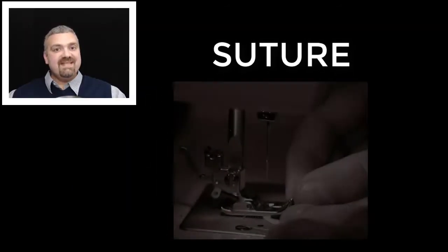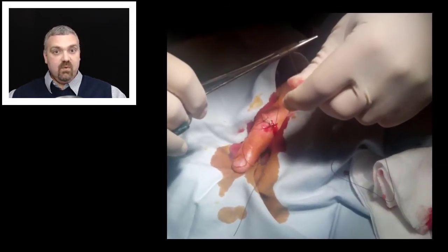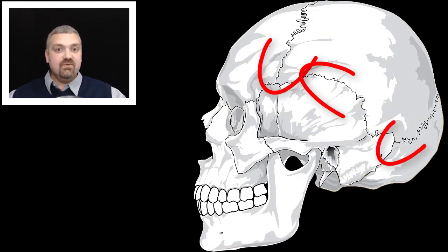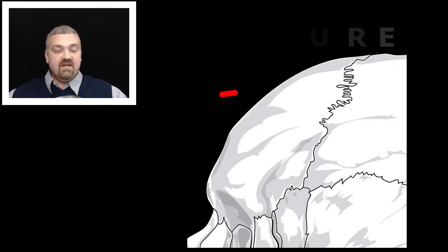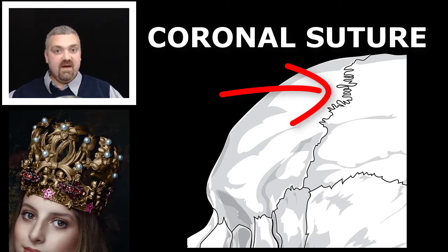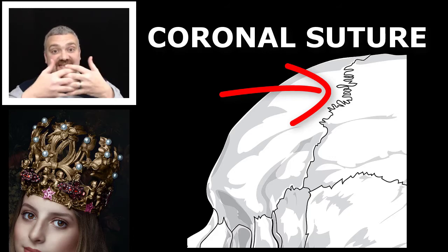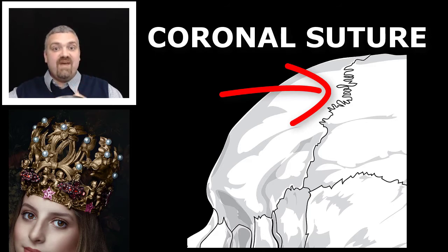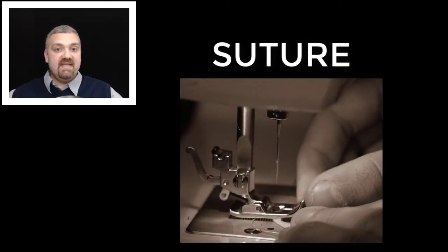Next we have suture, which means sewing. The first thing that pops into my head is an actual surgical suture, where you're literally sewing or stitching together someone's body part. We also have the sutures of the skull. The best example is the coronal suture — corona means crown — so your coronal suture is between the frontal bone and your two parietal bones. Suture means sewing because the coronal suture is an interlocking form of joint that literally sews those bones together, which is why they're classified as a synarthrosis, or an immovable joint.